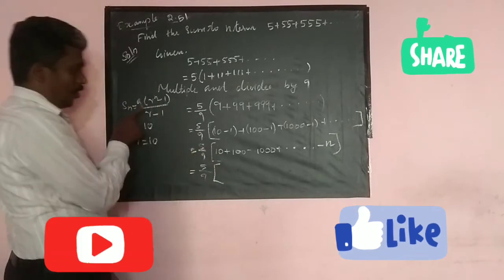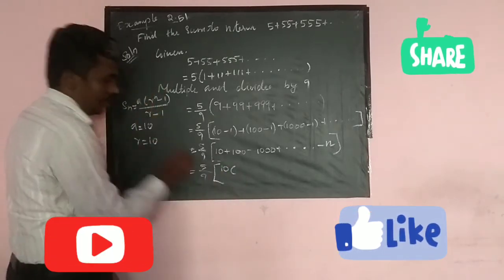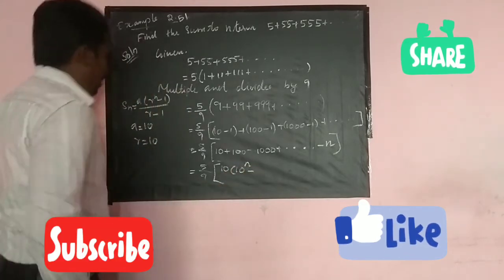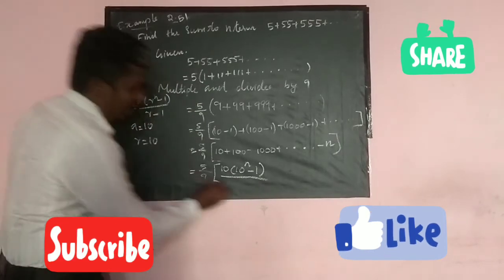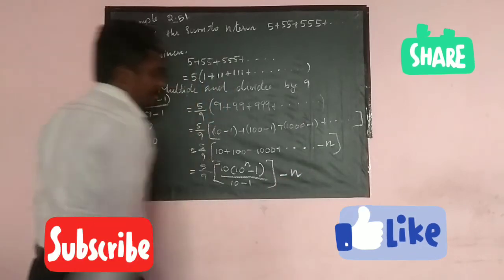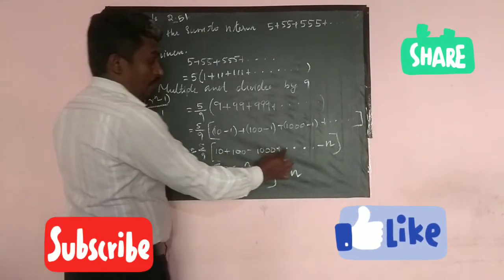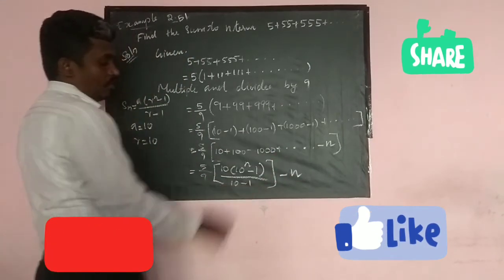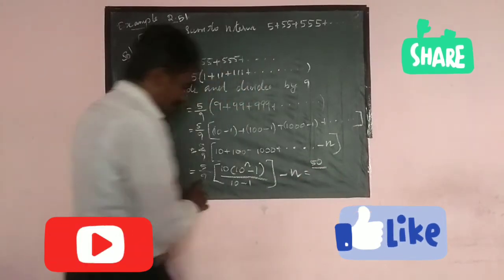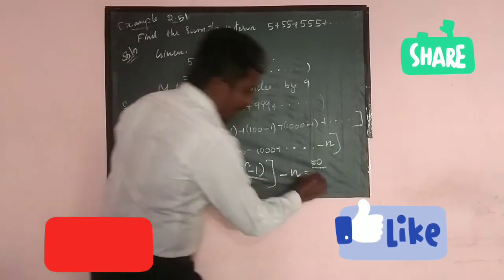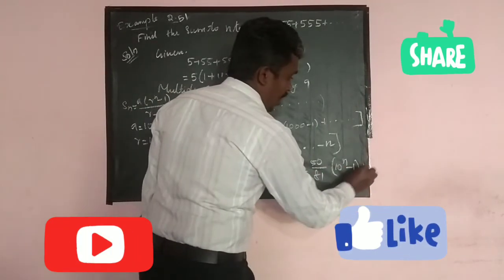Substituting into the formula: 5 by 9 into [10(10^n - 1) divided by (10 - 1)] minus n. That gives 5 by 9 into [10(10^n - 1) divided by 9] minus n, which simplifies to 5 times 10 over 9 times 9 into (10^n - 1) minus n, i.e., 50 over 81 times (10^n - 1) minus n.